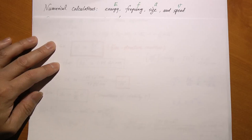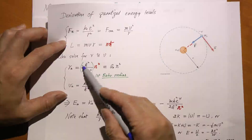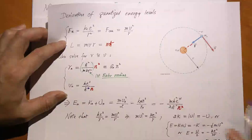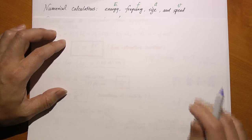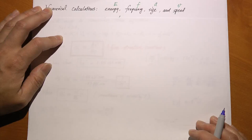Let's look at how we can find the energy, the frequency of the photon, and the size and speed of the electron in the Bohr model numerically without too much struggle. The formulas looked pretty complicated. It may take a lot of effort to put in SI unit values for k, e, and h-bar. Are there better ways to organize these results? The answer is definitely yes. We use combinations such as h-bar·c and introduce an important constant called the fine structure constant.